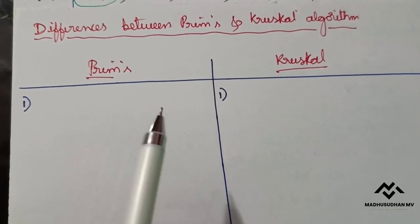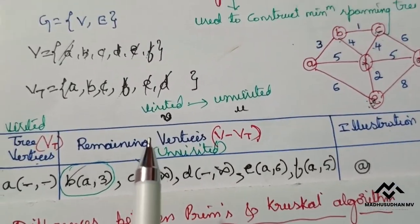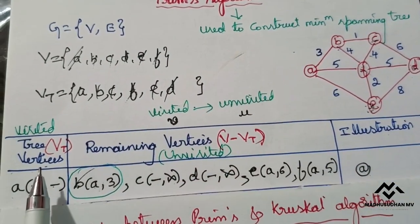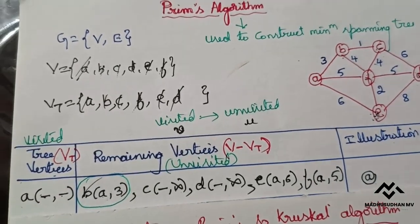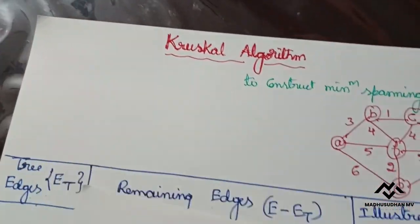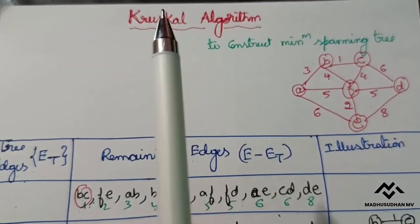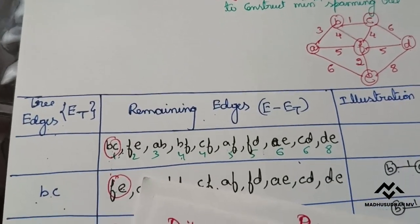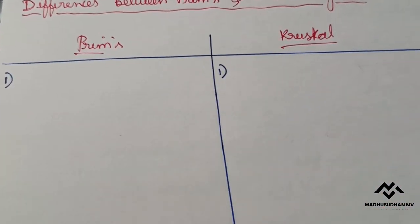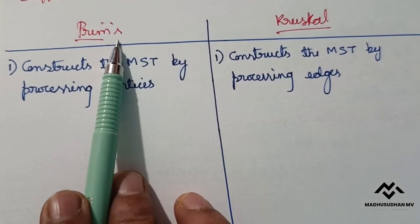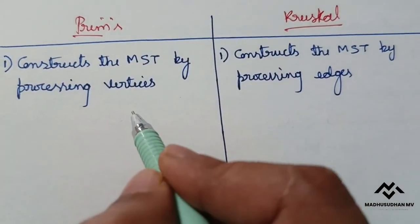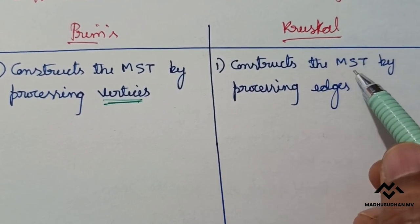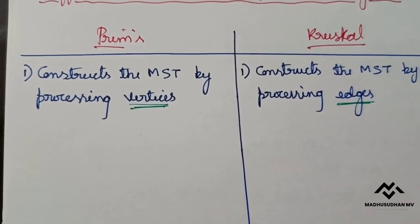The first difference: Prim's algorithm constructs the minimum spanning tree by processing vertices, whereas Kruskal's algorithm constructs the minimum spanning tree by processing edges. So this is the one basic difference — Prim's processes vertices, Kruskal's processes edges.